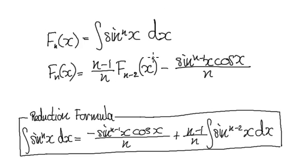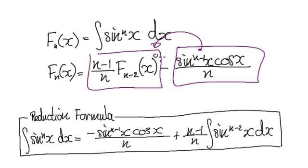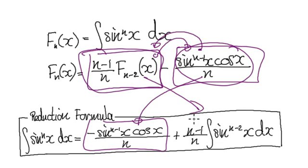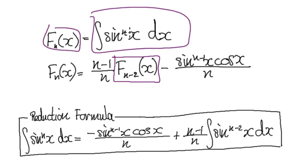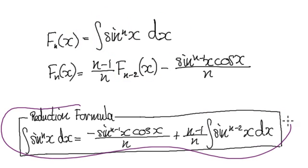Following on from the previous video, we got to this stage where you have one block take away another block. So let's switch these two around. This thing here becomes this, and then this thing here becomes this. Remember, capital F of n equals sine to the power of n, so this n minus 2 means 2 less than whatever's here. So this block here is actually this. Anyway, this is your reduction formula.